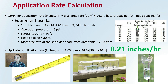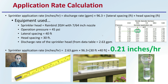Knowing the diameter of the nozzle and the pressure gives us the flow rate of 2.63 gallons per minute. We take that number and multiply it by 96.3, then divide by 30 feet times 40 feet. This gives us a coverage of 0.21 inches per hour. This allows us to calculate the application rate and know what's being delivered to our plants — in this case, 0.21 inches per hour.